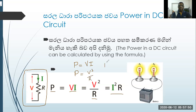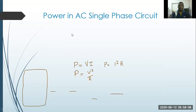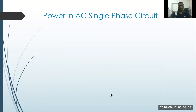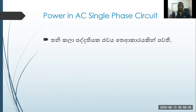So, three degrees. P samanay, I vargay R. Makeup is a term. One of the things that we have to do is — the path of the path is to the path of the path. Power in AC single phase circuit, and we are using this product.